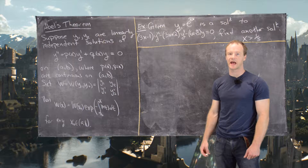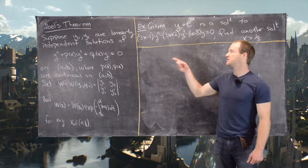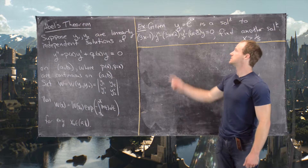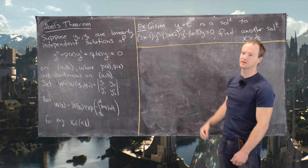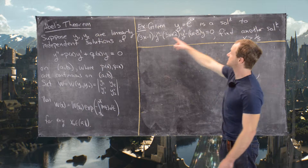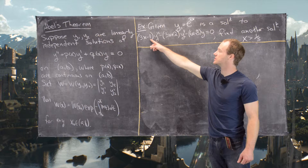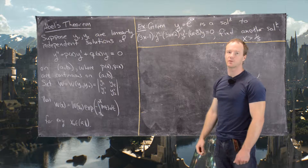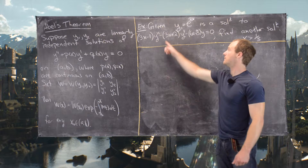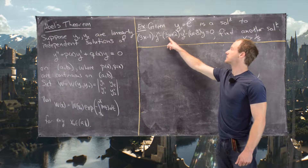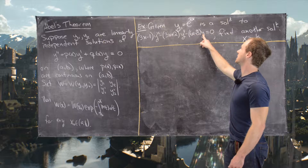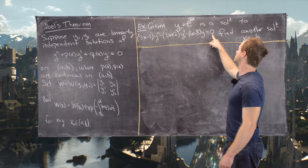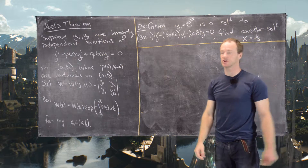In this video we're going to look at an application of Abel's theorem to solve the following problem. Given that y₁ equals e to the 2x is a solution to the differential equation (3x − 1)y″ − (3x + 2)y′ − (6x − 8)y = 0, find another solution.